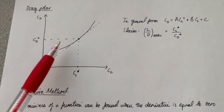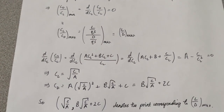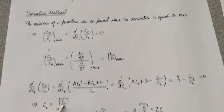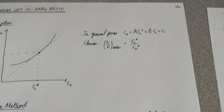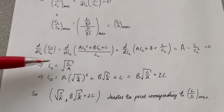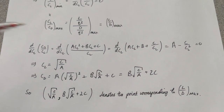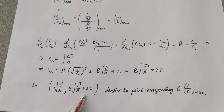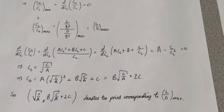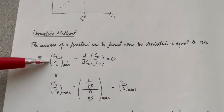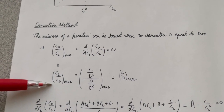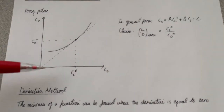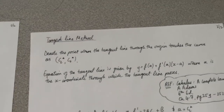These are the conditions associated with the maximum lift-to-drag ratio. We can plug that CL* value back into the general CD equation to get the corresponding CD*. At this coordinate — CL* equals this, CD* equals this — that denotes the point corresponding to L/D max. That's one method, but why is it equivalent to the tangent line method? Let's look at that.